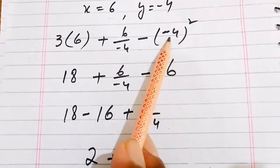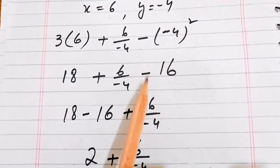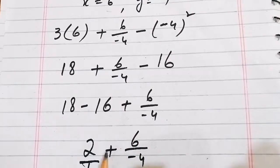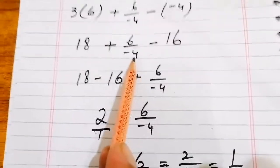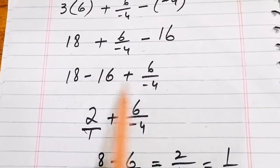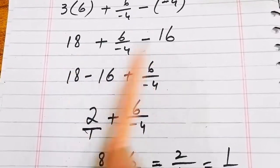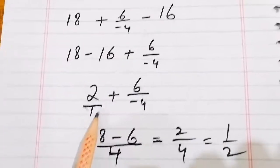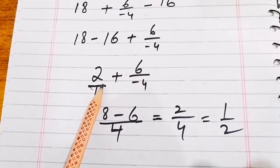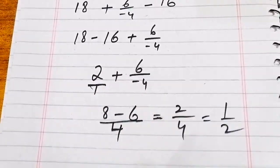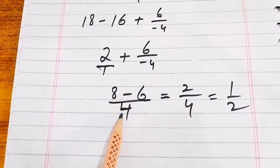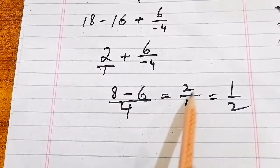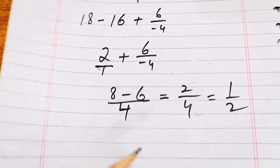Continuing part (d): taking LCM as 4, we compute 18 minus 16 which is 2, and further simplifying 6 over minus 4 gives minus 3 over 2. Taking LCM 4, we get 2 plus 8 minus 2, giving 1 over 2 as the answer.